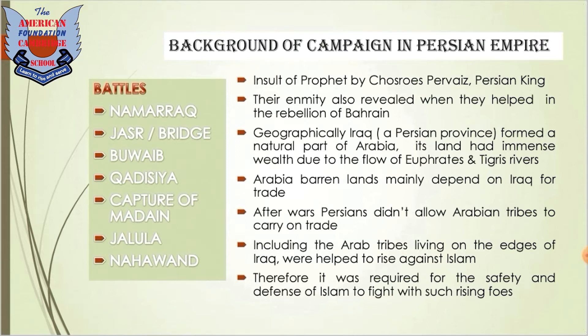A chart shows the battles which held under Umar's Caliphate with Persia: Battles at Namarak and Jussar, Boawib, Qadisiya, Capture of Madain, Jalula, and Nahavand.